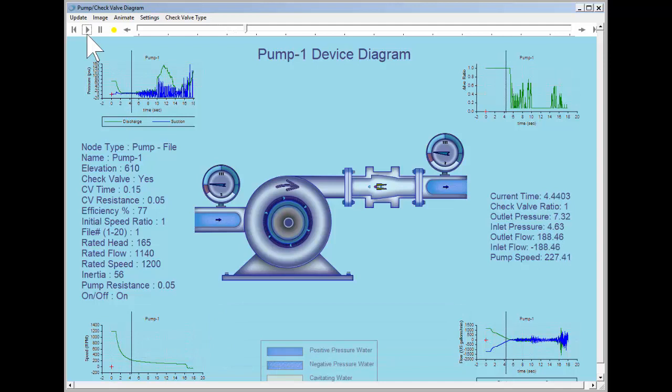At this time in the simulation, we can see the check valve closes, but doesn't stay closed. Instead, it oscillates in what is known as check valve chatter. Check valve chatter can cause both premature wear on the valve and possibly unacceptable swings in system pressures.